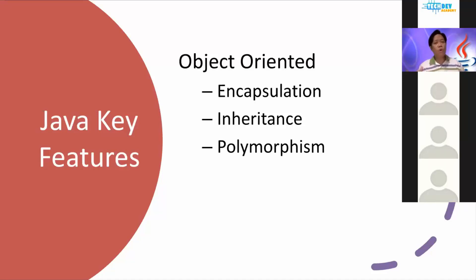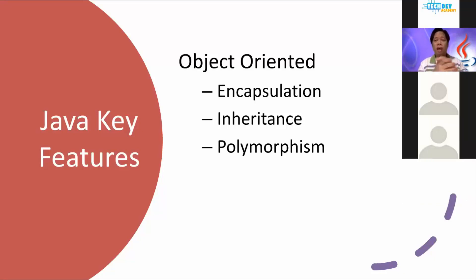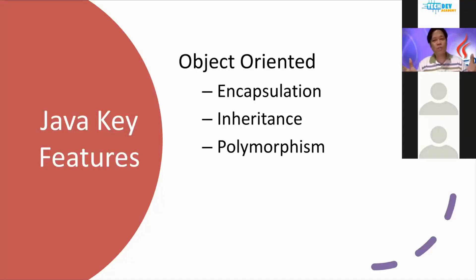In all OOPLs — C-sharp, Java, Python — there's always a concept of encapsulation which allows you to protect your data. You encapsulate your data from direct access. So we can say that Java is secured. We don't just create code that can be exposed to anybody that can see it.